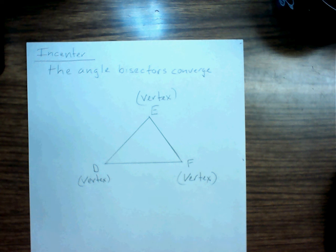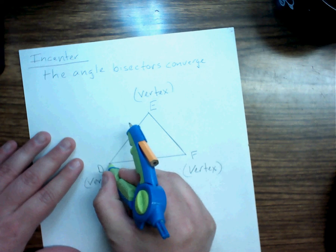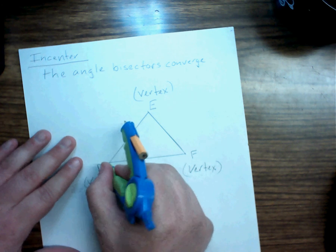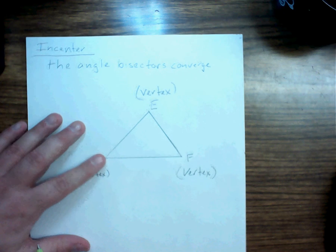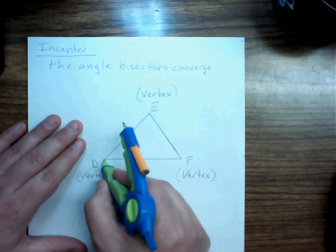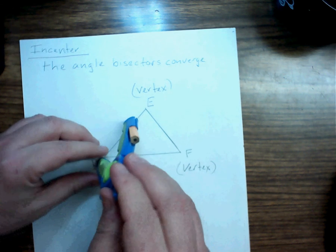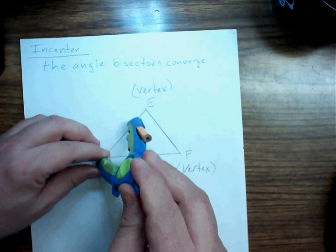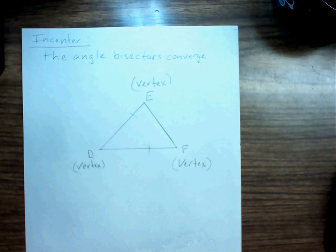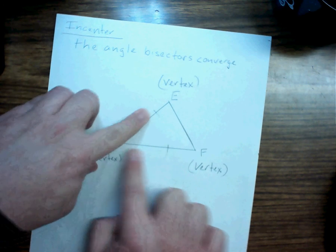We're going to cut angle D in half, angle E in half, and angle F in half. Take the pointy edge of the compass and dig it into D. The two line segments associated with angle D are DE and DF. So I'm going to dig that in and make a little arc on DE and a little arc on DF, because that is angle D — angle D has these two lines.